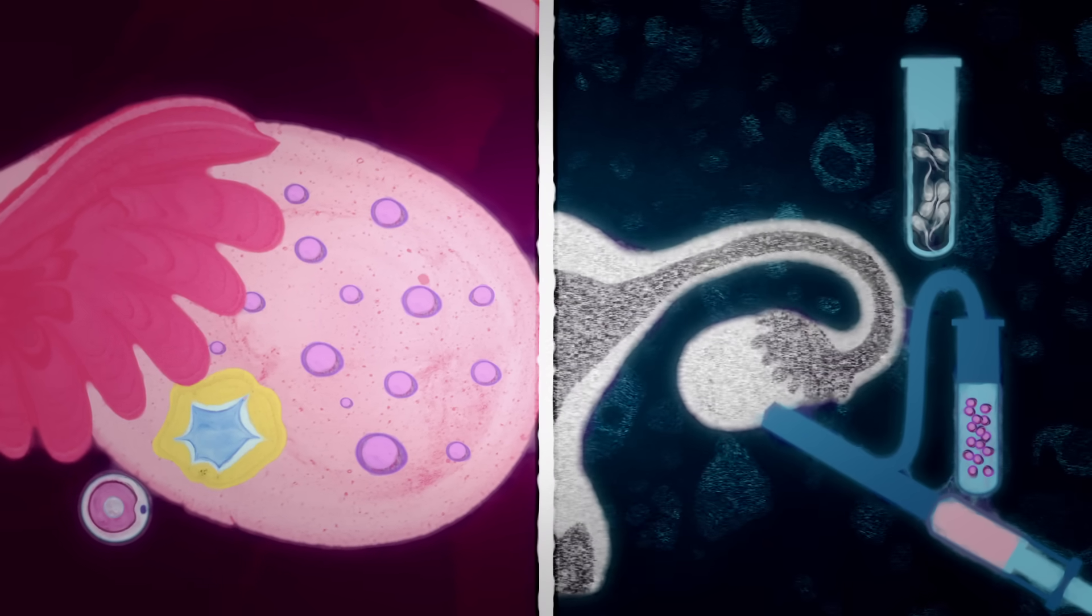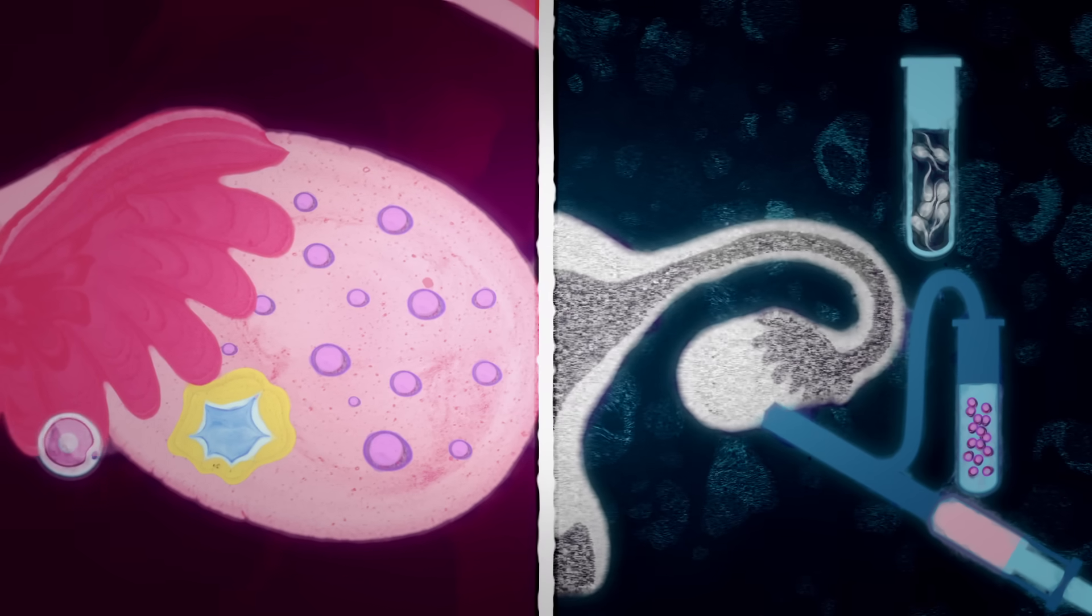Most sperm samples are produced by masturbation. In the laboratory, the identified eggs are stripped of surrounding cells and prepared for fertilization in a petri dish.